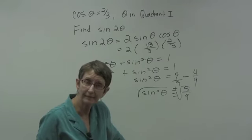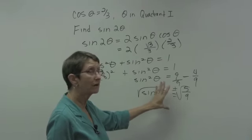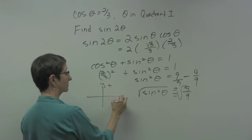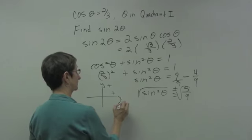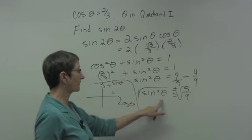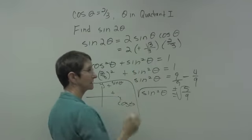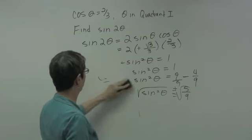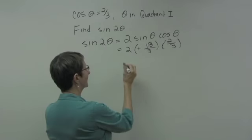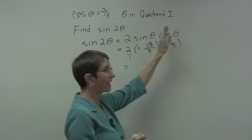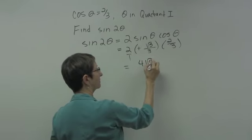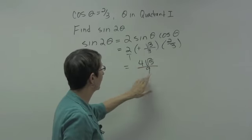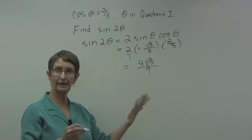Every time you take a square root, you have to determine if it's positive or negative. We were told quadrant 1, where y values are positive, and since y is like sine, the sine will be positive. So this is the positive square root of 5 divided by 3. Putting it all together — 2 times (root 5 over 3) times (2 over 3) — gives 4 square root of 5 over 9. So the sine of 2 theta is 4 square root of 5 divided by 9, using the double-angle formula for sine and the Pythagorean identity.